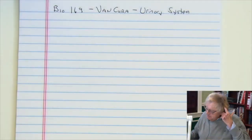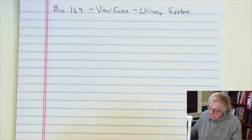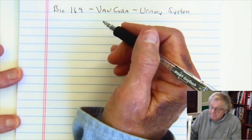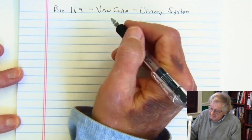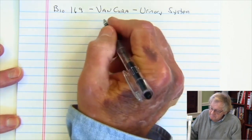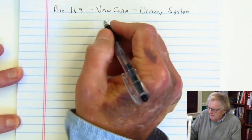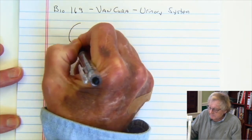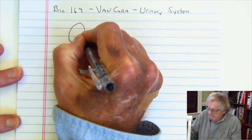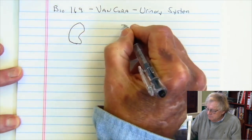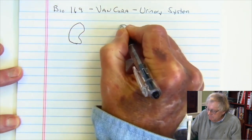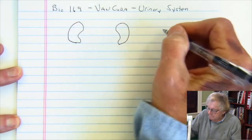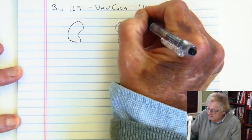Today we're going to discuss the urinary system and start out with what I would call the macroscopic view of the urinary system. Think of the urinary system as having your paired kidneys, and those paired kidneys are going to be retroperitoneal — a key term.